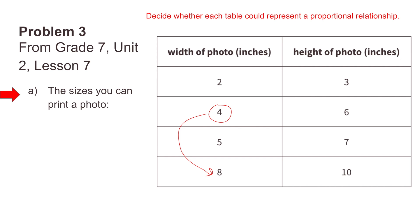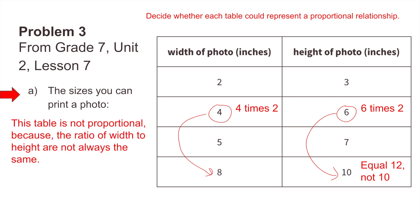When the width of the photo in inches goes from 4 to 8, that's doubling. Four times 2 is 8. We'd have to do the same thing to the height of the photo. Six times 2 would equal 12, not 10. So we know that this is not a proportional relationship. This table is not proportional because the ratio of width to height are not always the same.